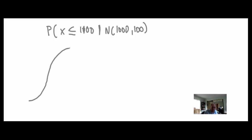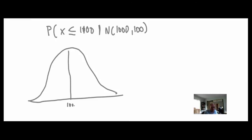Here's our normal distribution with mean 1,000. Standard deviations are 100 apart, so moving right: 1,100, 1,200, 1,300; moving left: 900, 800, 700. I want the probability that x < 1,100. Here's 1,100 — draw a line up. I want less than, so the arrow points left. I fill in the left side — that's what I want.